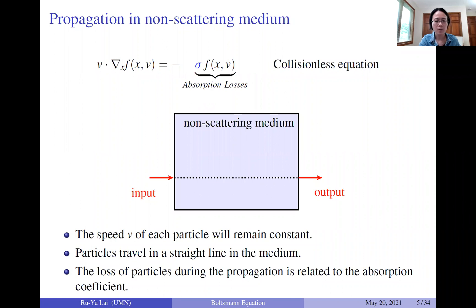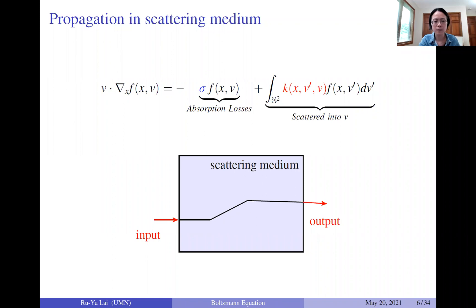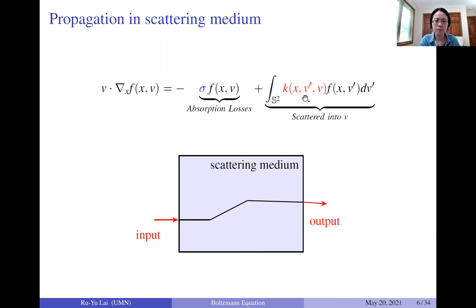In a scattering medium, particles traveling may not follow a simple straight line — they might encounter several scattering effects before hitting the boundary again, as shown in the picture. So we have the scattering operator with coefficient k scattering from an initial direction v-prime into the v-direction. This can be considered a gain term at position x with velocity v.